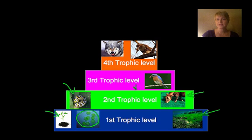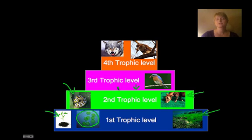Animals on the third trophic level would depend on the smaller animals that are on the second trophic level, so they would be eating the insects — it might be eating the mice.